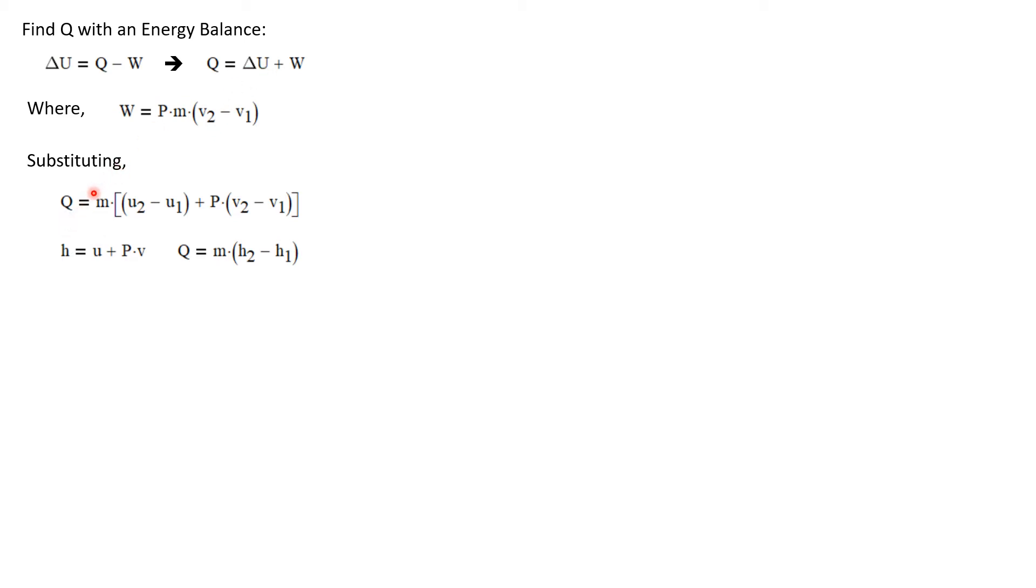So Q then is delta U, which we'll rewrite as the mass times the change in specific internal energy, plus W, which is pressure times mass times V2 minus V1. Recognizing that enthalpy is just U plus PV, we can rewrite this again, as the heat transfer is just the mass times the change in specific enthalpy.